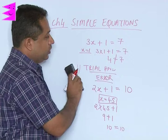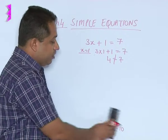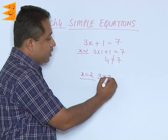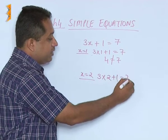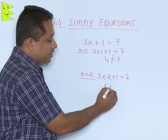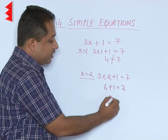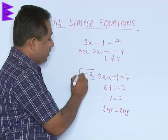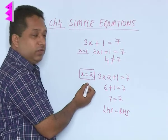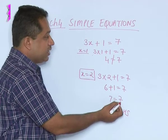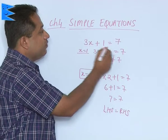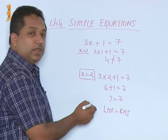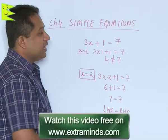So we are going to take the next value of x. So we will take x as 2. So when we take x as 2, we get 3 into 2 plus 1 is 7. Applying BODMAS first we will multiply, this will become 6 plus 1 is 7. So we get 7 equal to 7. So we get LHS when we are substituting the value of x as 2. Now when we are substituting x as 2, we are getting LHS equal to RHS, that means the solution for this equation is x is 2.